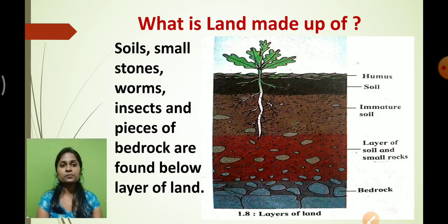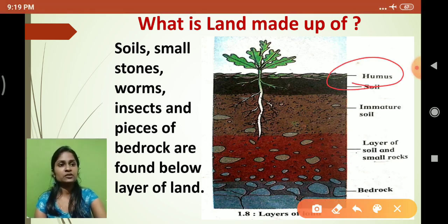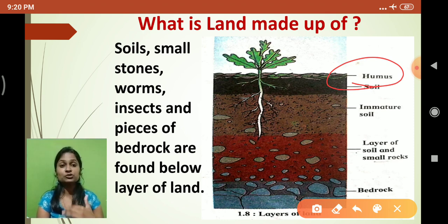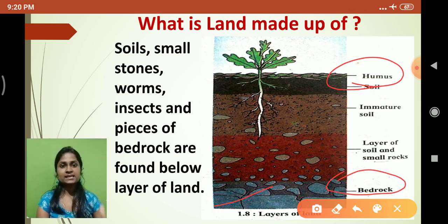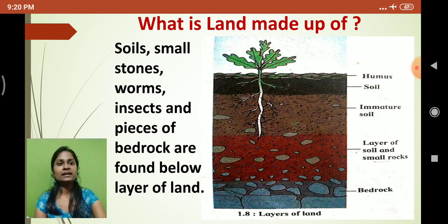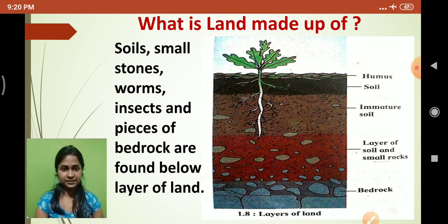For soil formation, we need to know what land is made up of. As you can see in the diagram, on the topmost layer humus is present. Humus is the soft soil which supplies nutrition to the plant. At the bottom is bedrock, where the main rocks are. So land is basically made up of soil, small stones, worms, insects, and pieces of bedrock — all these things come together and form land.